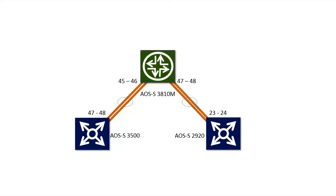Looking at the slide, you can see two blue devices — these are our edge switches: a 3500 and a 2920. We'll have a look at the physical picture of these devices shortly. The green device is a 3810 and this is our core switch. We're going to connect every switch with dual cables back to the core switch to ensure virtually one connection for redundancy and performance.